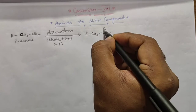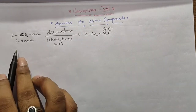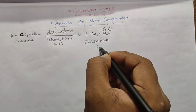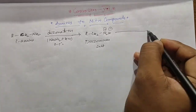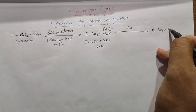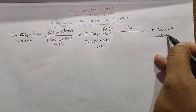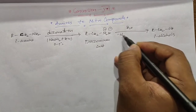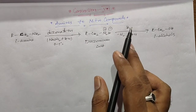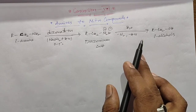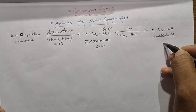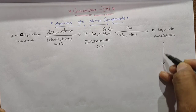In the second step, the diazonium salt undergoes hydrolysis to form primary alcohols, with loss of dinitrogen and hydrogen chloride. So in the second step, the diazonium salt is converted into primary alcohols.